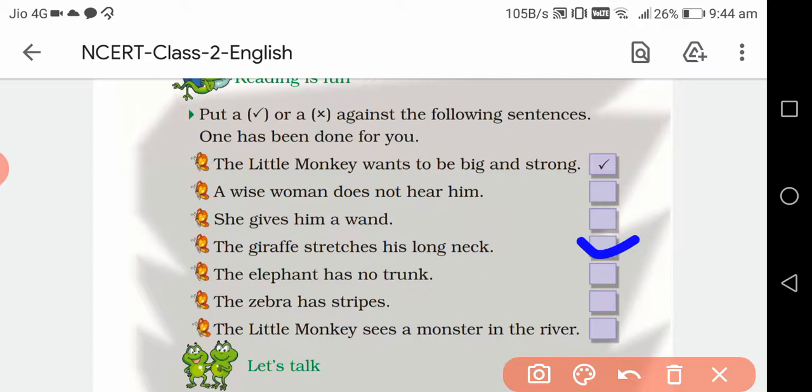The elephant has no trunk. This is false. So you have to put cross. The zebra has stripes. Yes, it is true.